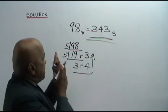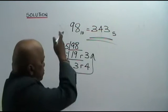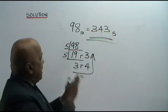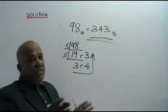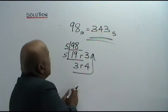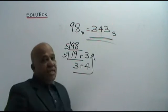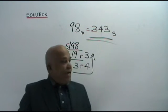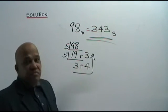Whenever you change from base 10 to any other base, you just keep on dividing. If you want to change to base 5, divide by 5. If you want to change to base 8, keep on dividing by 8 until you get a digit smaller than 8 and so on. Very simple. I hope you have got it. Thank you.